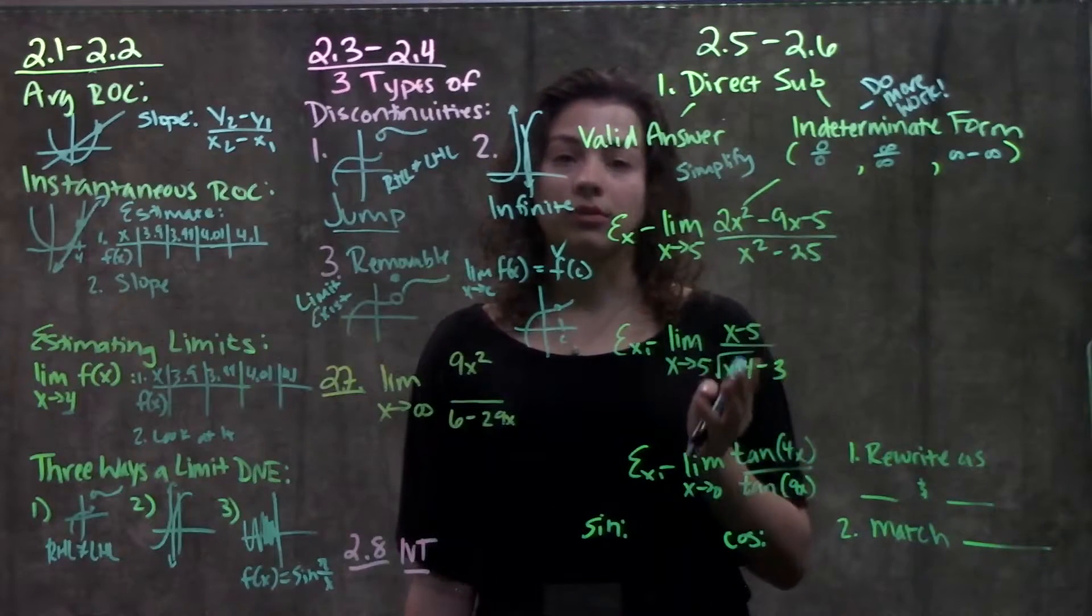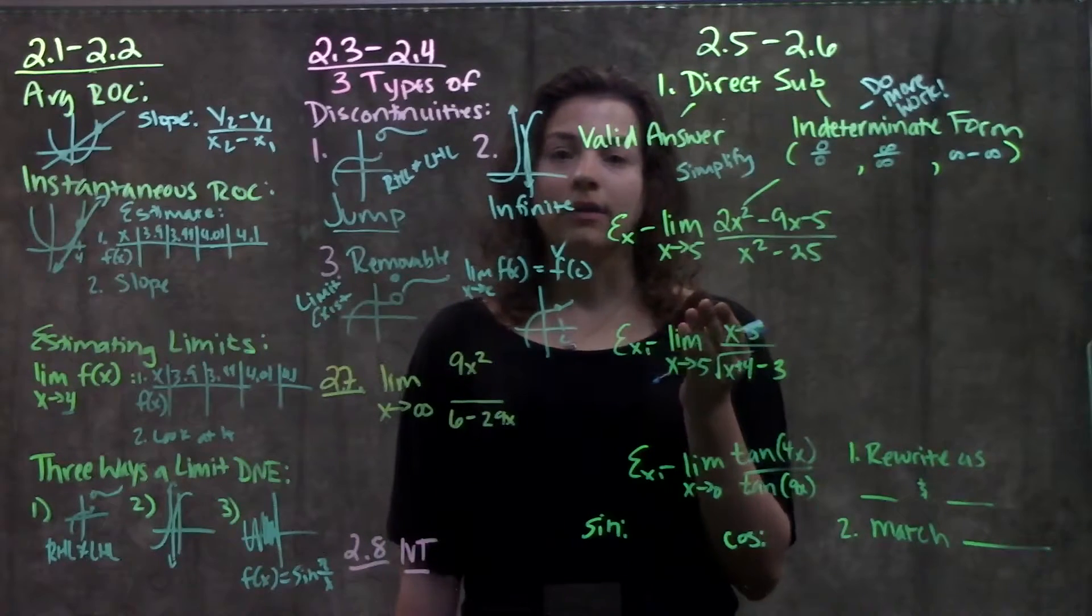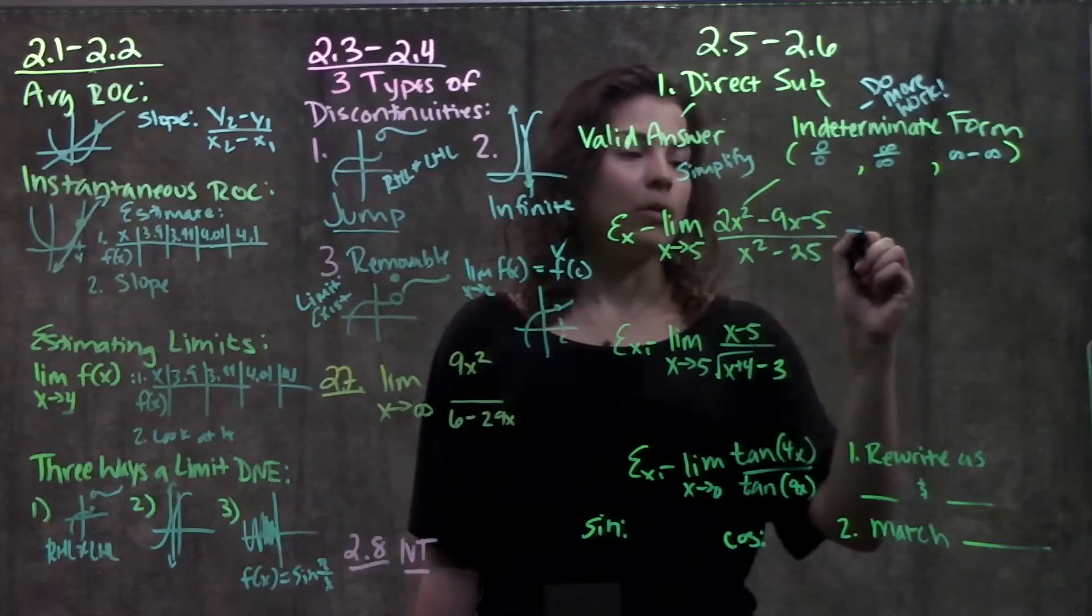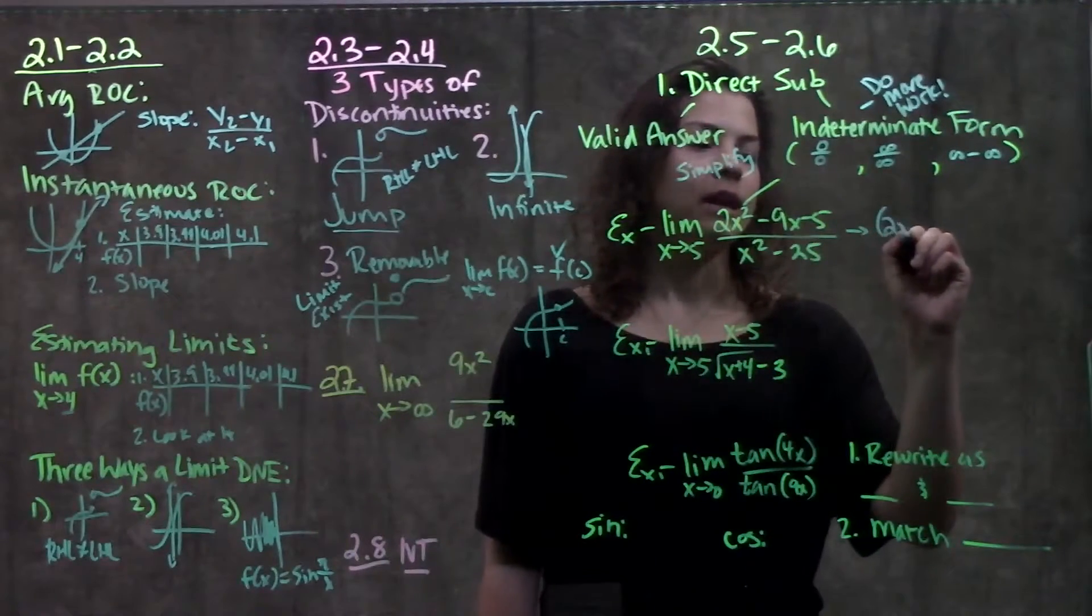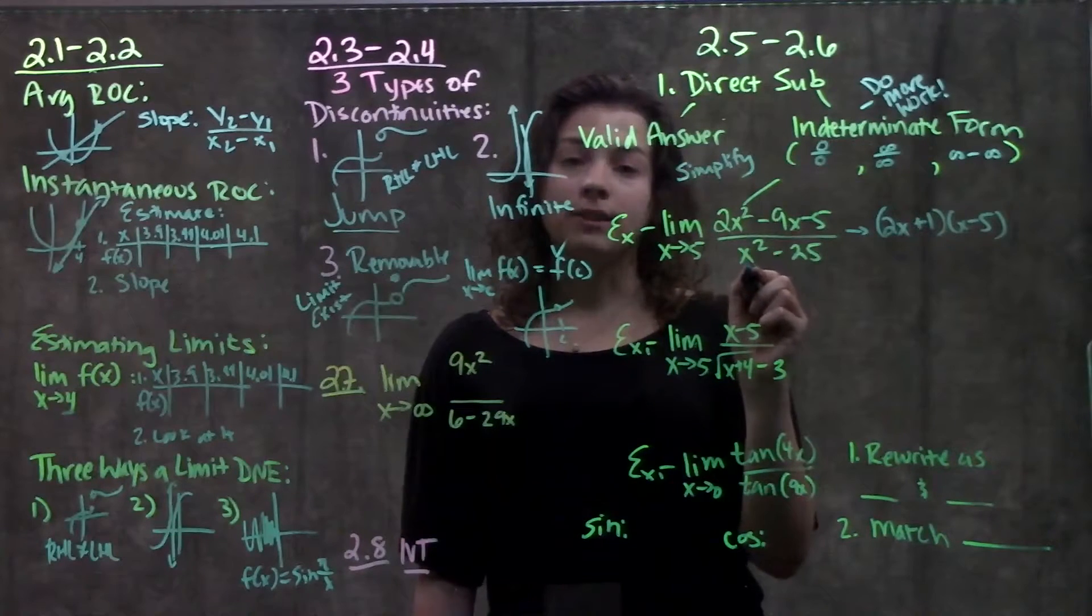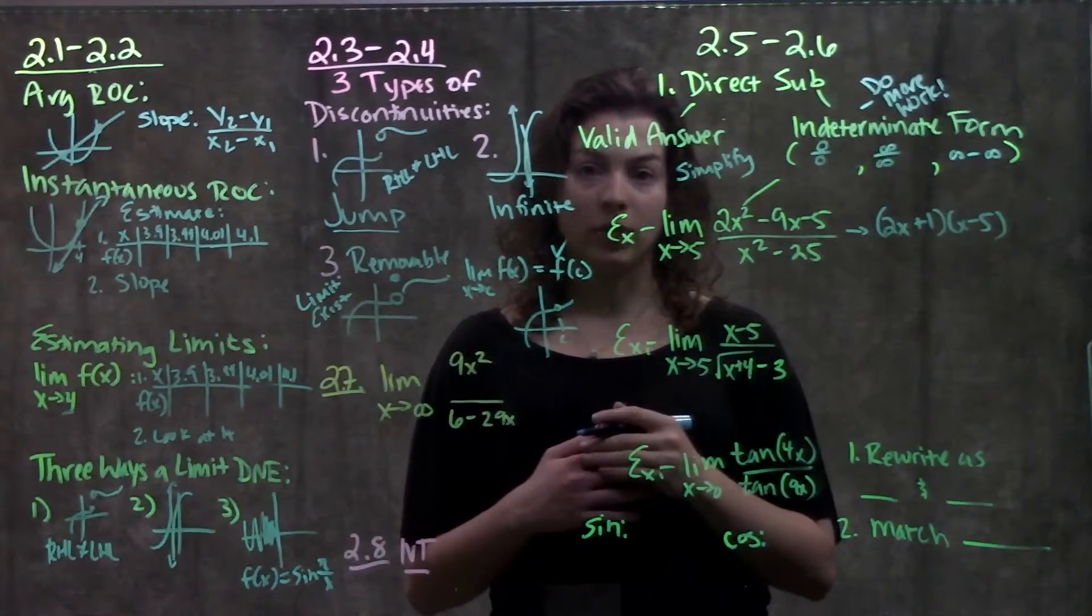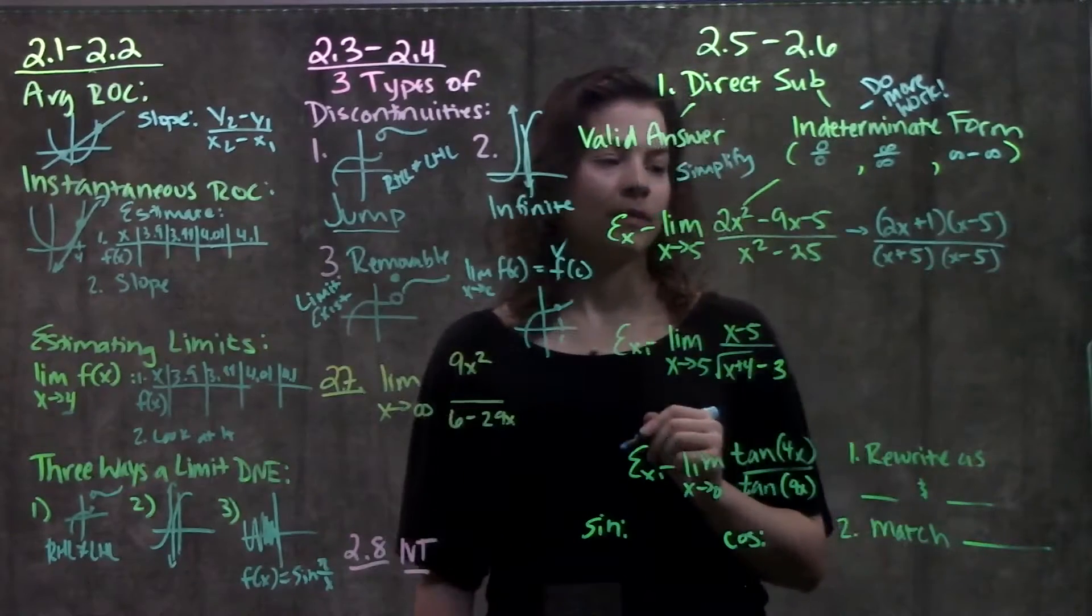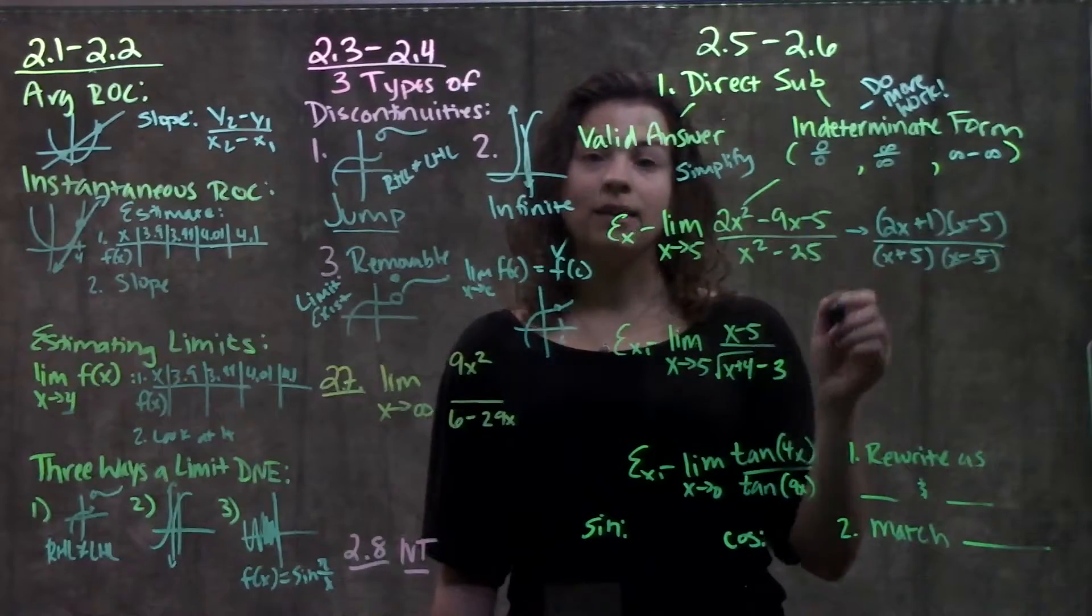From here, we're going to go through three common types of functions that you'll see, and the first steps you should do, and how to simplify them. The first one is a function that has complex algebraic expressions. We see here in the numerator we have a quadratic. We can simplify a quadratic by foiling it down into two binomials being multiplied by each other. This quadratic simplifies down into 2x plus 1 and x minus 5. On the bottom here, we have a pattern called the difference of perfect squares. That's whenever we have a squared minus b squared, two perfect squares being subtracted. This always simplifies down into a plus b and a minus b. Notice, we have an x minus 5 term that could cancel here. We could cross these out, try direct substitution again, and we'd get a valid answer.